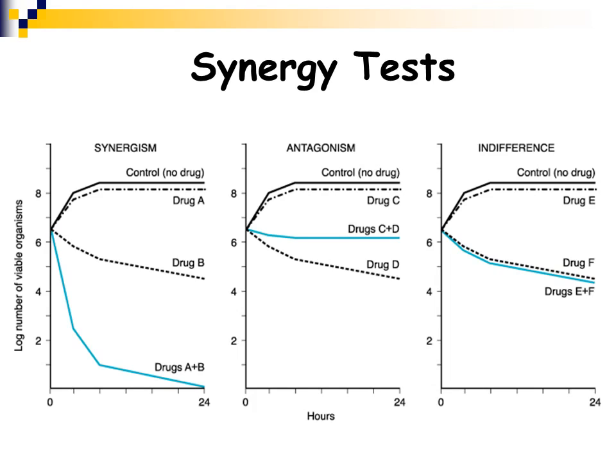Antagonism is when one drug may not work at all and another drug does work, but when you put the two together, the one that does work — in this case drug D — doesn't work as well. So one drug is antagonizing the other, and you wouldn't want to combine drugs acting in an antagonistic fashion. Indifference is when drug E doesn't work at all and drug F does work, but when you combine E and F, there's no difference — it still works the same as drug F alone. The key is that synergy gives a much better response when combining two drugs, and that would be the reason to use a combination.